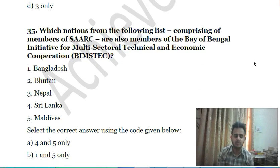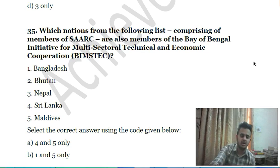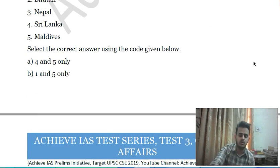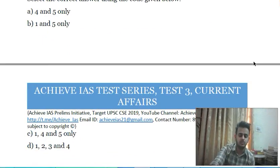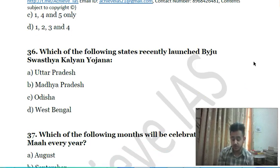Thirty-fourth question: which nations from the following list of SAARC members are also members of the Bay of Bengal Initiative for Multi-Sectoral Technical and Economic Cooperation (BIMSTEC)? First, Bangladesh; second, Bhutan; third, Nepal; fourth, Sri Lanka; fifth, Maldives. Choose the correct answer.